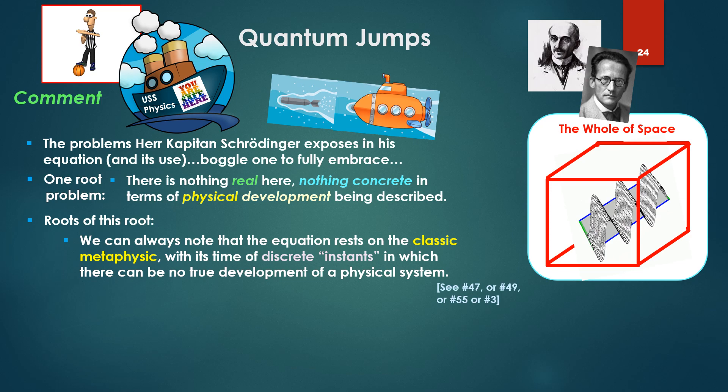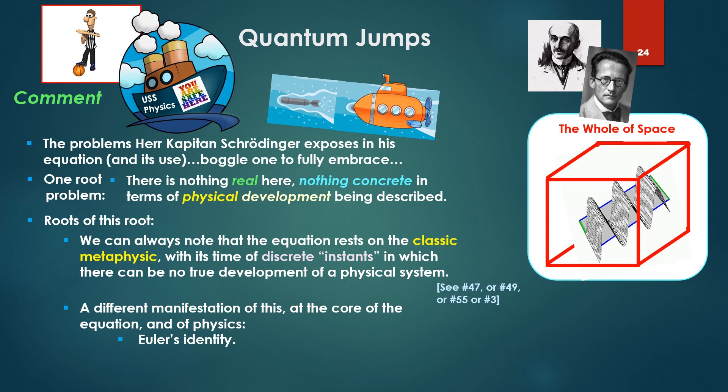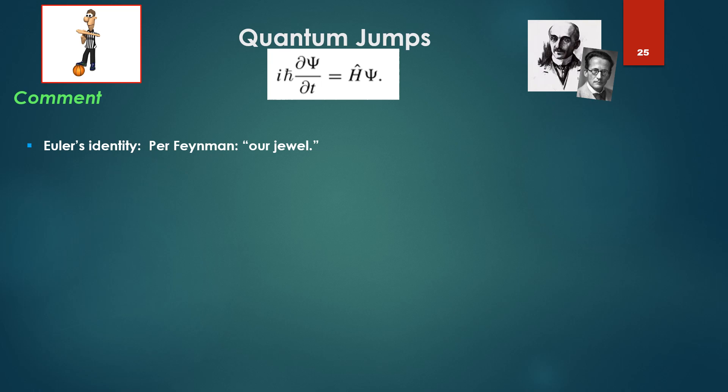Some roots of this root: we can always note that the equation rests on the classic metaphysics with its time of discrete instances in which there can be then no true development of a physical system. A different manifestation of this at the core of the equation and the physics is identity. And in truth, we can't really separate the physics from the math anymore. So it's interesting to look at.